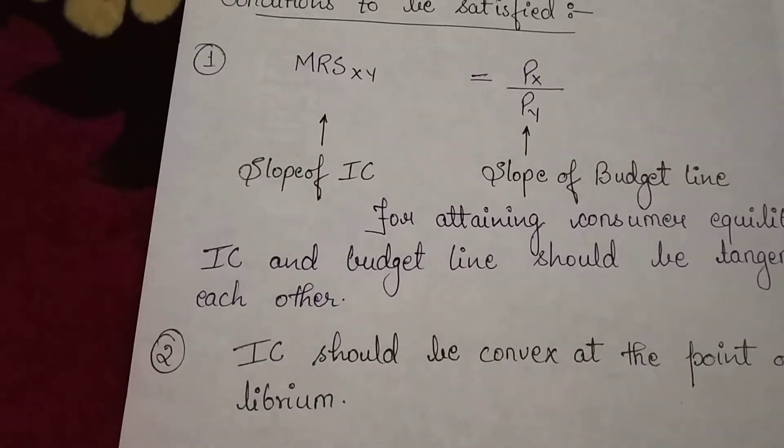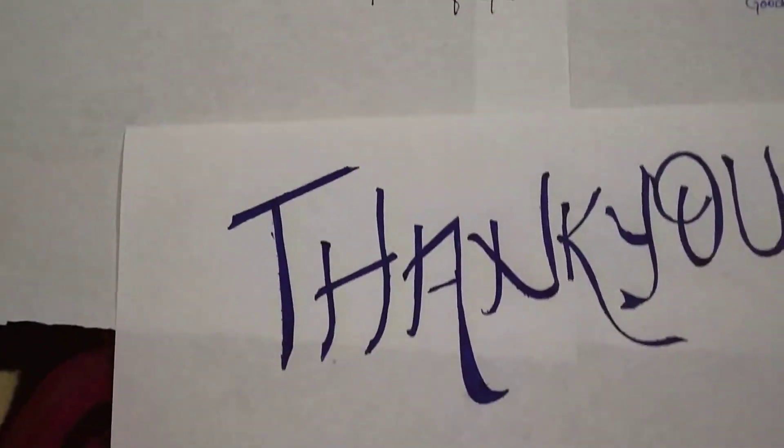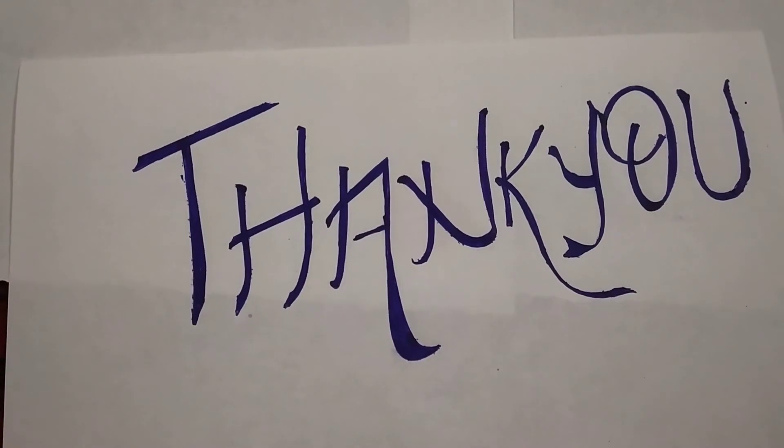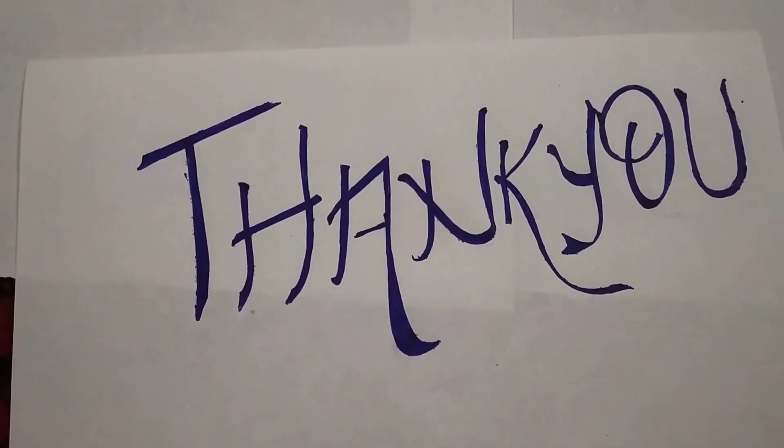So we may conclude that the consumer reaches equilibrium at the point of tangency between IC curve and price line. Thank you for watching the video. Please like, comment and subscribe, and if there is any kind of suggestion, please comment in the comment box.